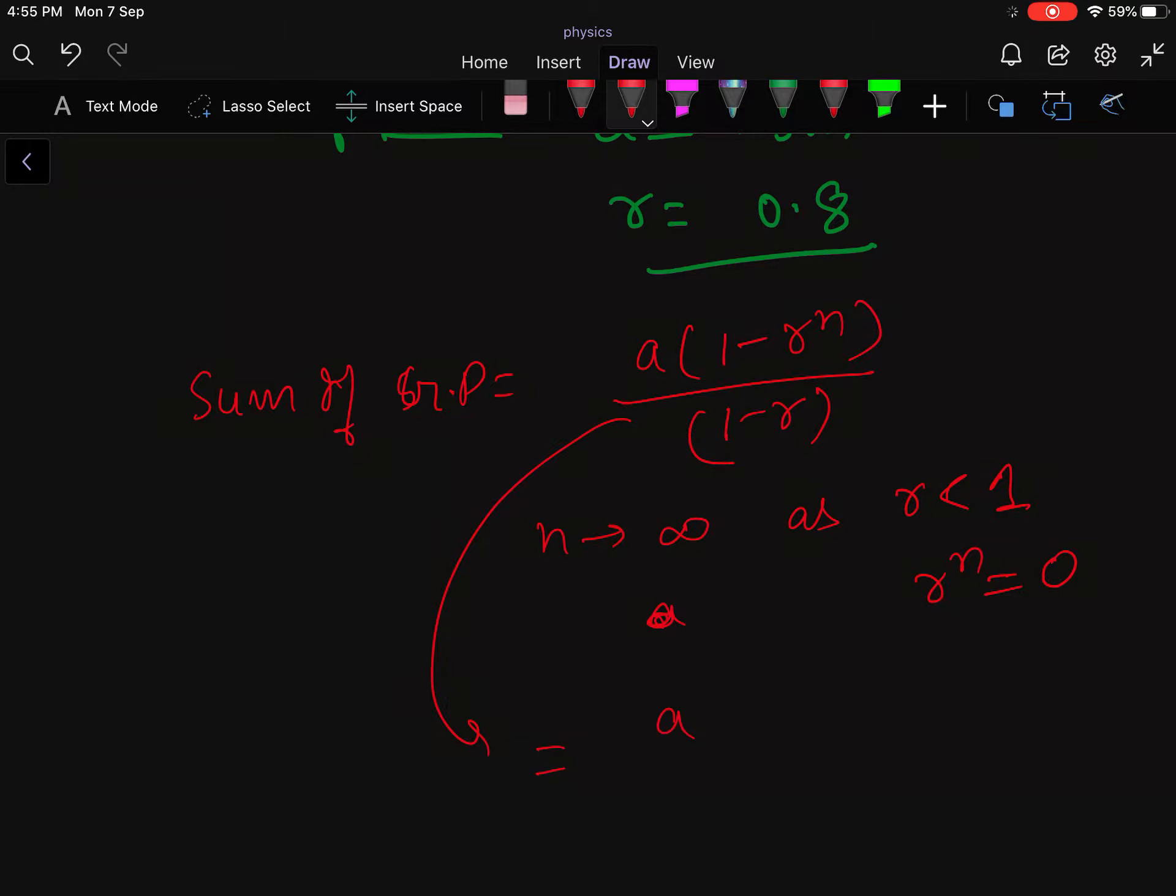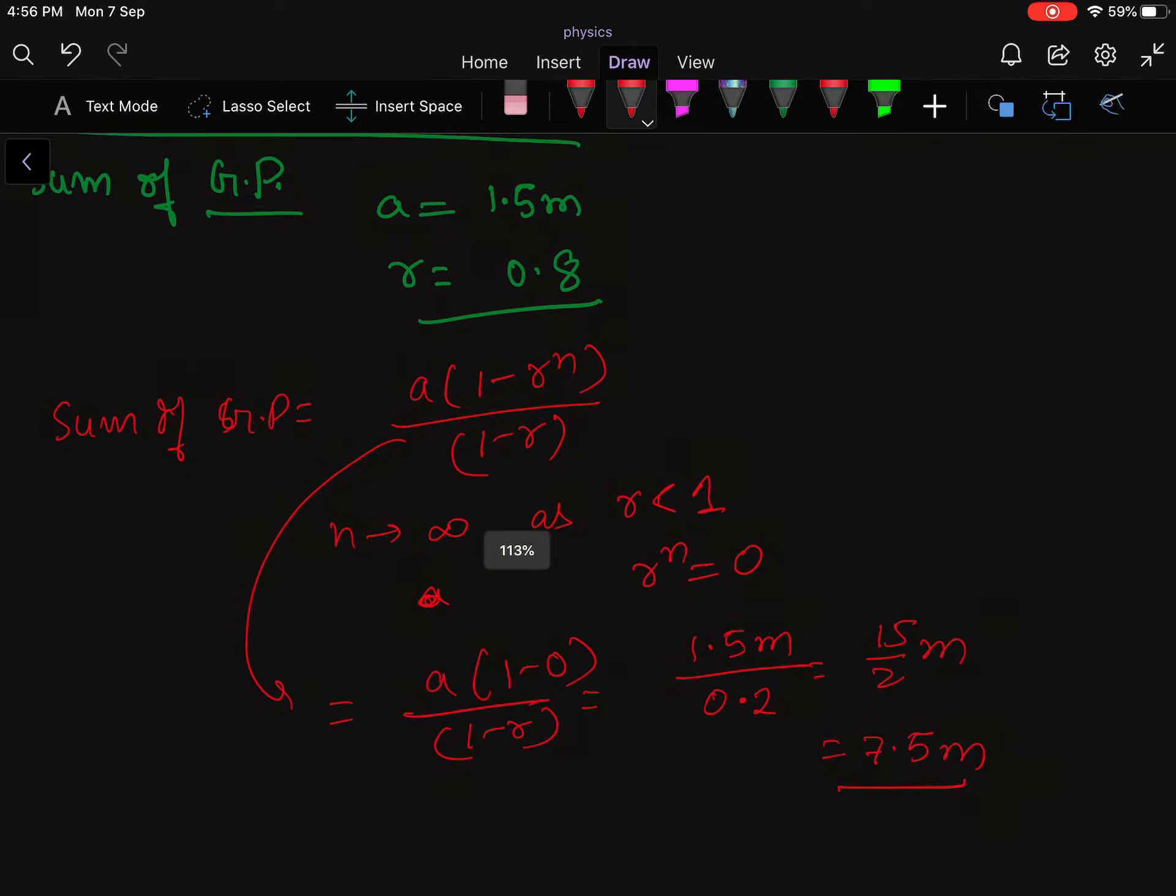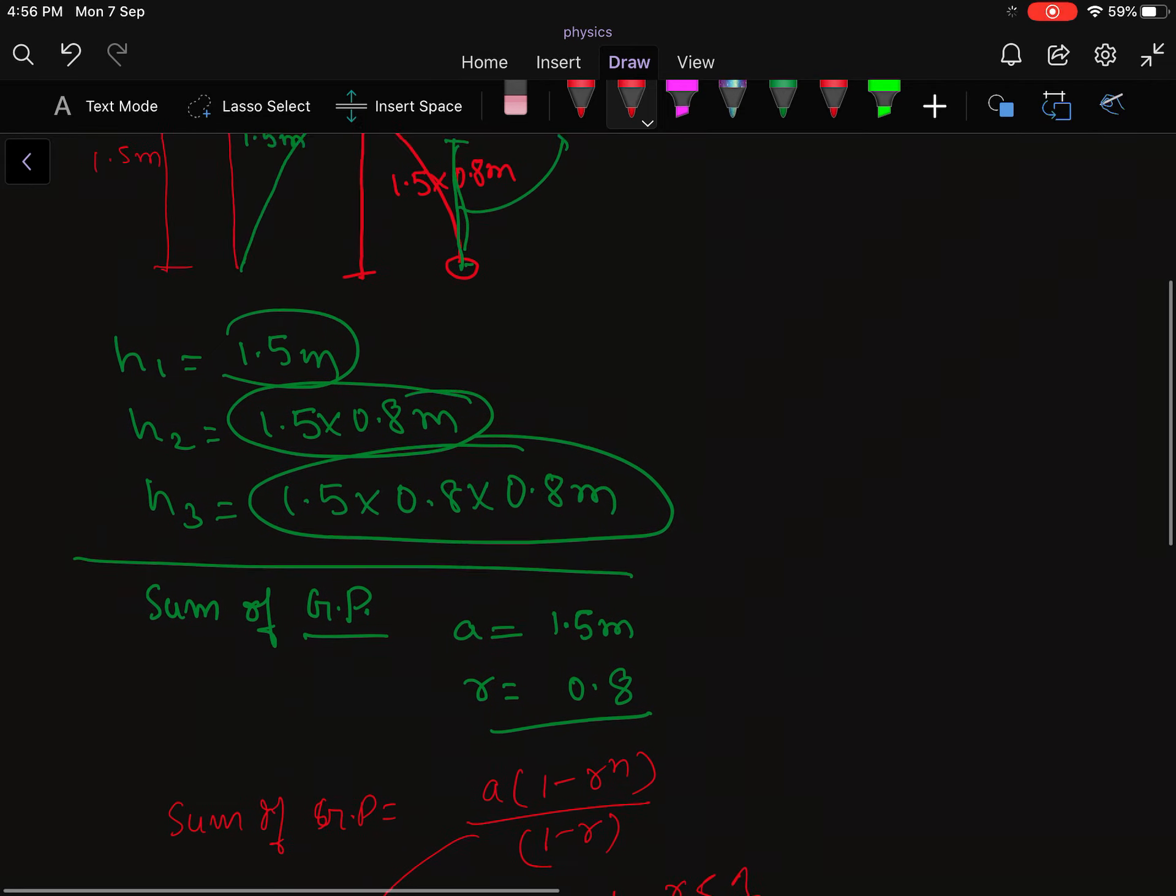So when you solve it, you will get a × (1 - 0) / (1 - r). So a is 1.5 meters divided by (1 - 0.8), that will be 0.2. So 1.5 / 0.2 meters, which becomes 7.5 meters. So it will travel 7.5 meters distance downward till it stops.